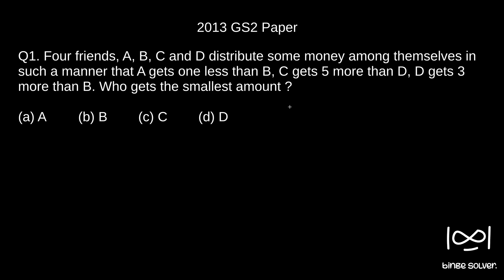Anyway, we will take up the first question. Four friends A, B, C and D distribute some money among themselves in such a manner that A gets 1 less than B, C gets 5 more than D, D gets 3 more than B, who gets the smallest amount?